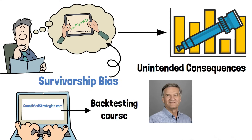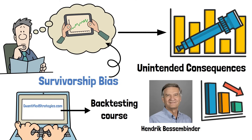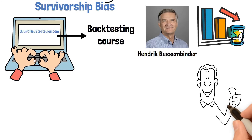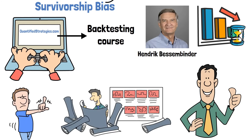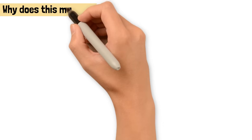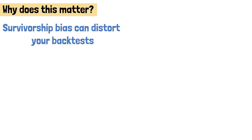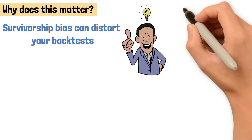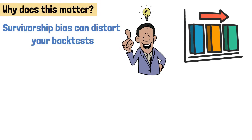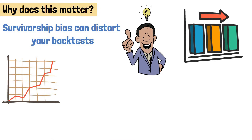Research by Hendrik Bessembinder reveals that the great majority of listed companies fail to beat short-term treasury bills. That's right — for every success story, there are countless companies that don't make the cut. Survivorship bias can distort your backtests and lead to flawed trading strategies. The averages we often see don't represent the typical stock, but rather a few star performers that skew the data.